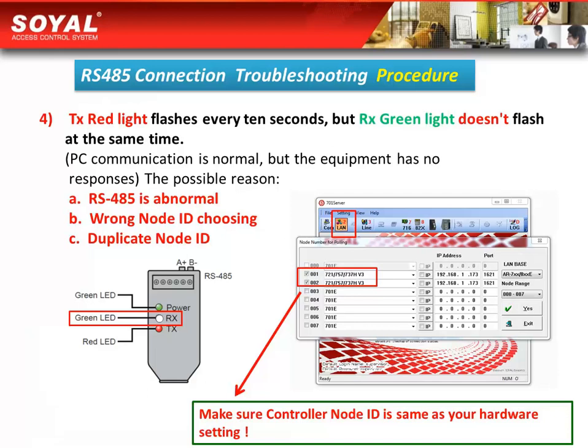Fourth, check the TX red light to see whether it flashes every 10 seconds. If we confirm that the TX red light flashes every 10 seconds but the RX green light does not flash at the same time, it means the PC communication is normal but the equipment has no response. There are three possible reasons: first, the RS485 is abnormal; second, the wrong node ID was chosen; and third, duplicate node ID.